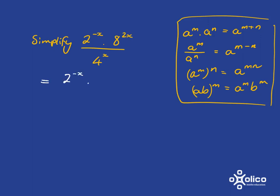We're going to write everything in terms of 2. So 8, in place of 8, we're going to put 2 cubed. And that's being raised to the 2x. And in place of 4, we're going to put 2 squared. And that's getting raised to the x.